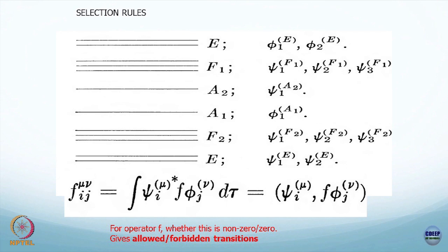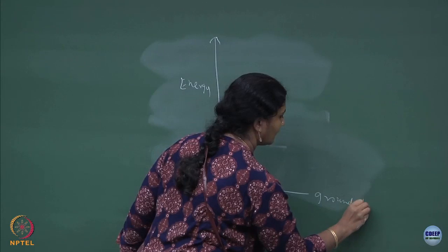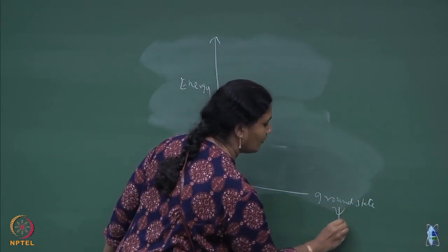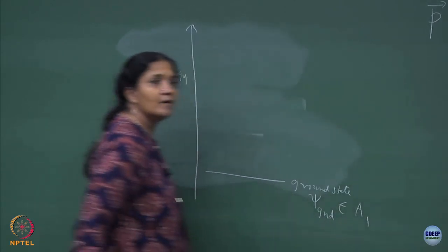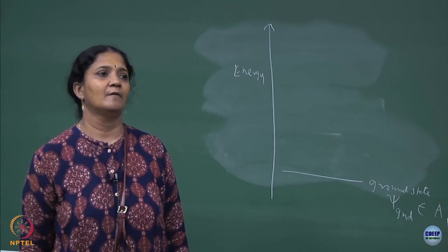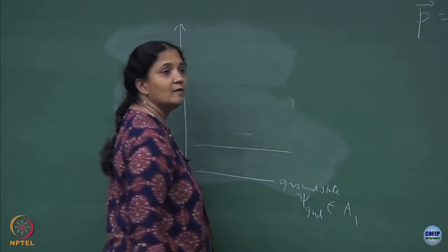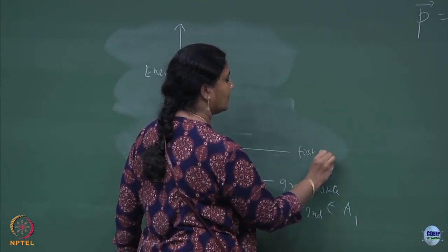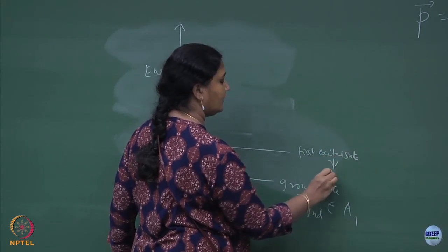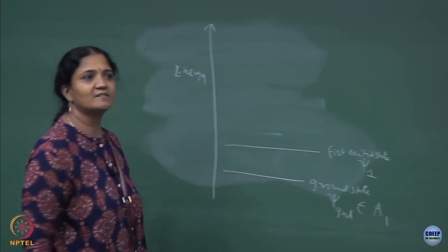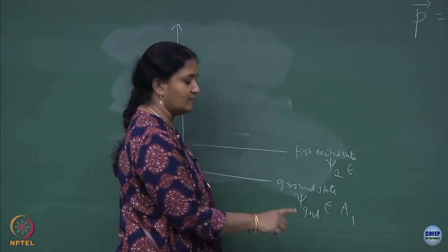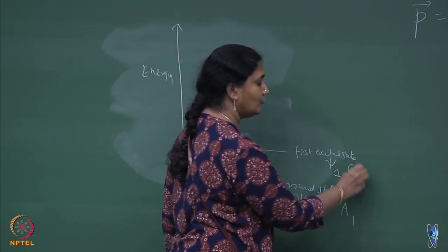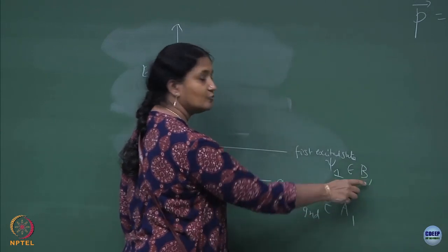This is the energy line — you have a ground state, and let me call it psi ground. It belongs to which EREP? A1, right. And then you can have a first excited state; let me call it psi 1. It is an odd function, this is an even function, so this will belong to B1. It belongs to the EREP B1.